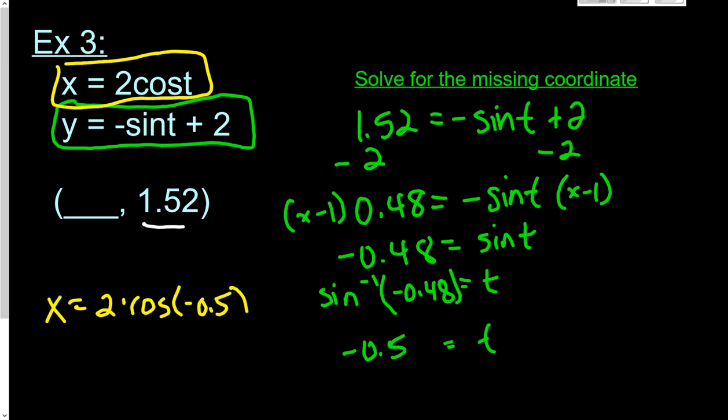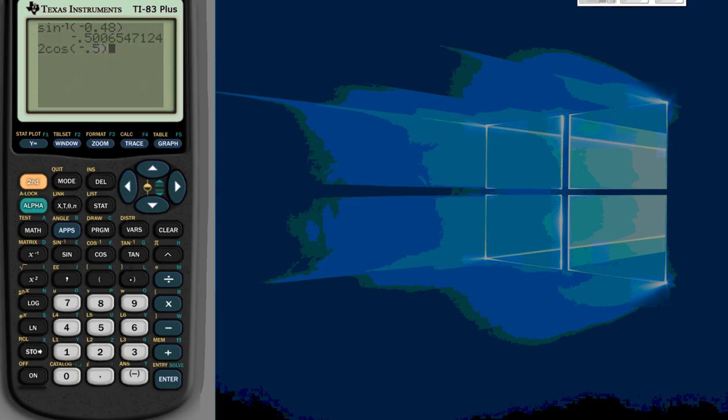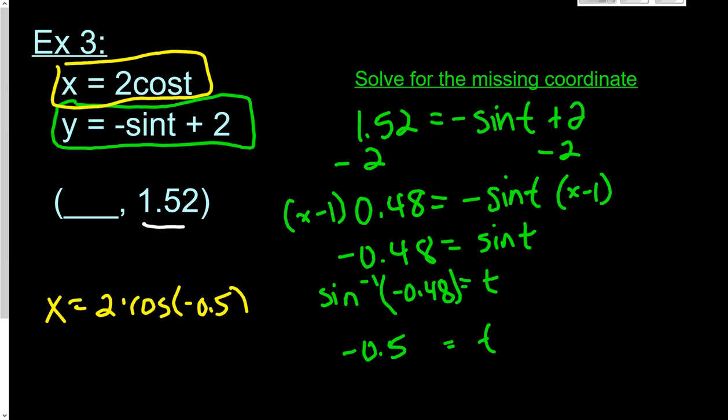So we get x equals 2 times cosine of negative 0.5. Pull back up the calculator. 2 cosine negative 0.5. And I get 1.76 approximately if I round correctly. So my x value is going to be 1.76.